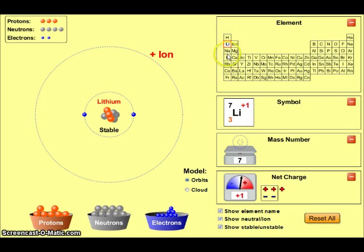All of the alkali metals—lithium, sodium, potassium, rubidium—form plus one ions by donating the electron in their highest energy level.